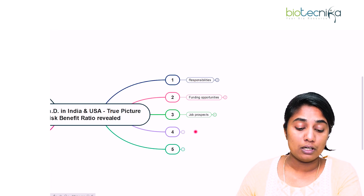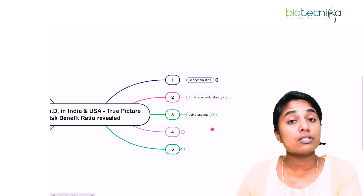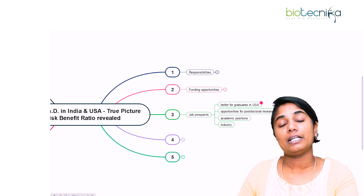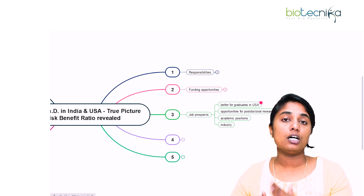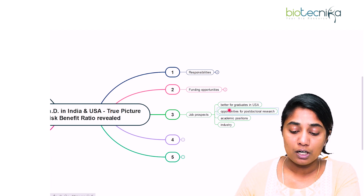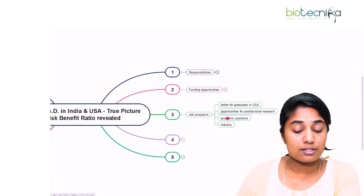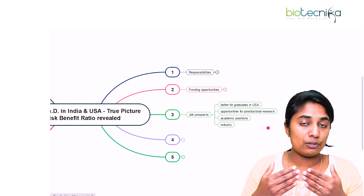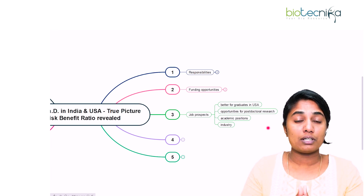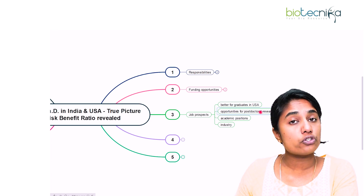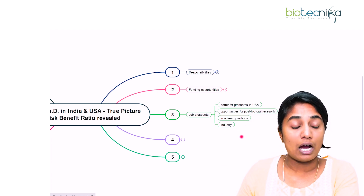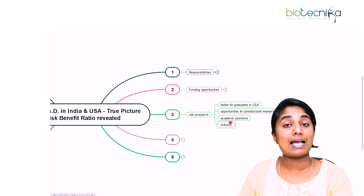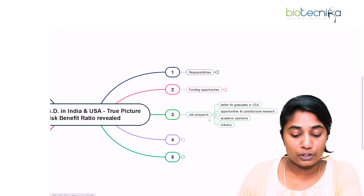The third point is about job prospects, especially after completing your PhD. There are better job opportunities for people who finish their PhD in USA. It could be for postdoctoral research, academic positions such as teaching, professor, or associate professor roles, or entering industry after finishing your PhD. The opportunities are better in USA as compared to India.